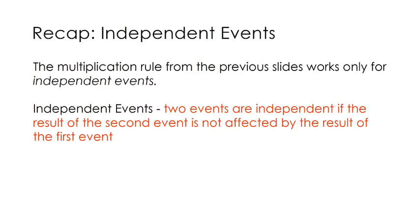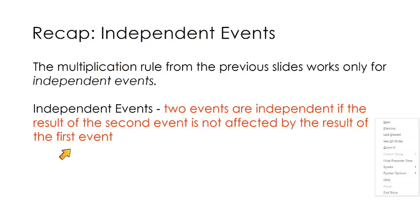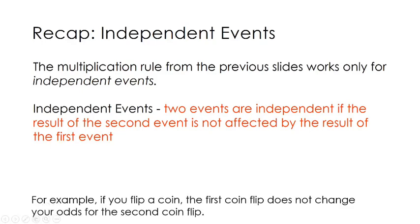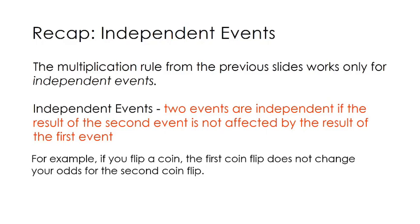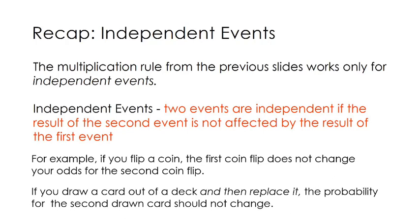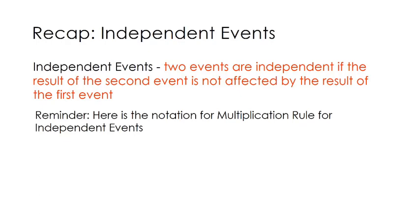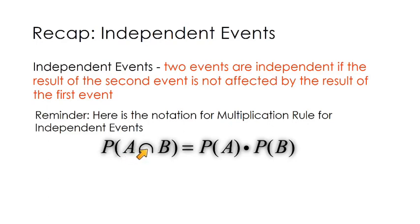Let's recap. The multiplication rule works only if the events are independent. Two events are independent if the result of the second event is not affected by the result of the first event. When we did the coin flip, the first flip does not affect the second. A coin flip doesn't affect a dice roll. When you draw a card and put it back into the deck, that does not affect the next draw. Later we're going to look at events where the first event does affect the second. The probability of A and B happening is the probability of A times the probability of B.